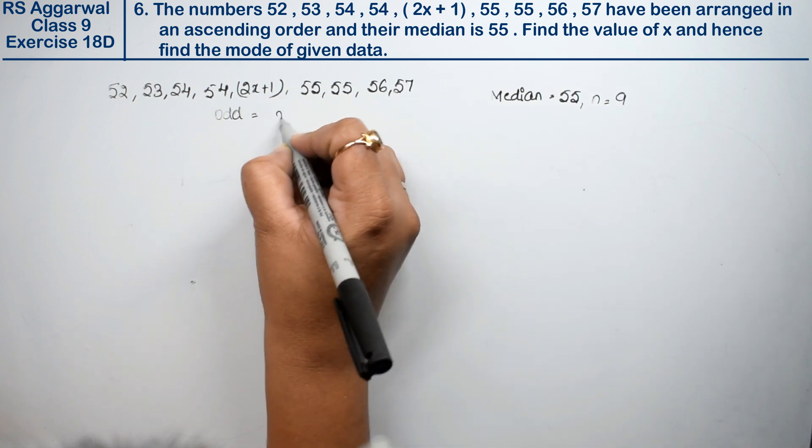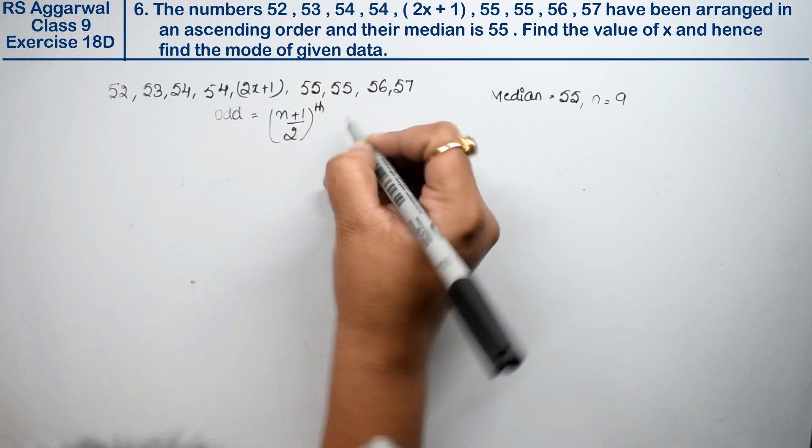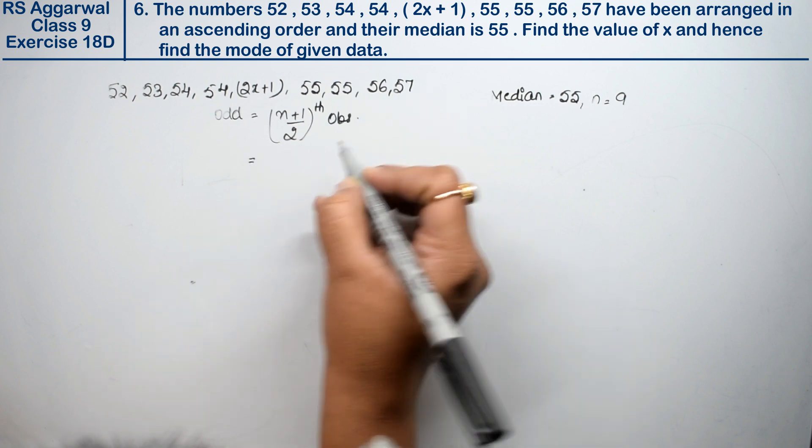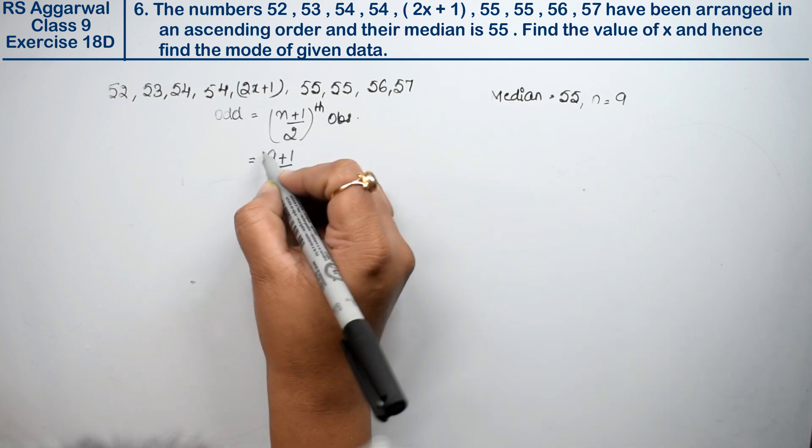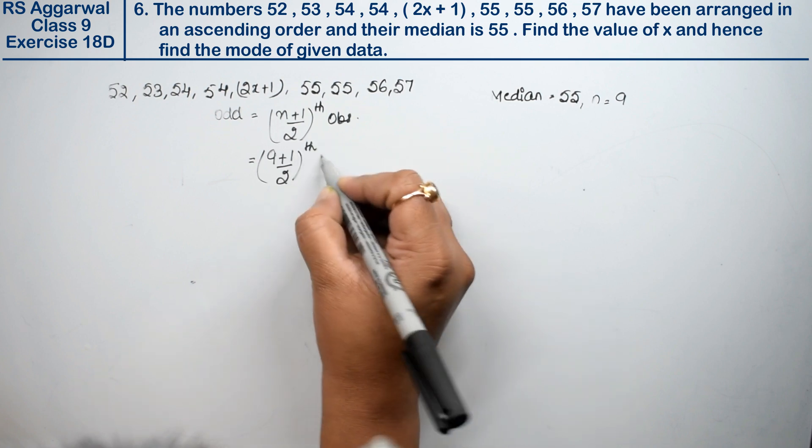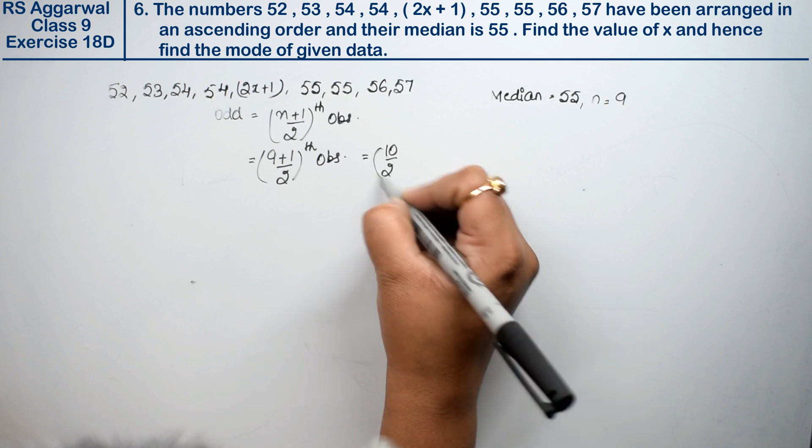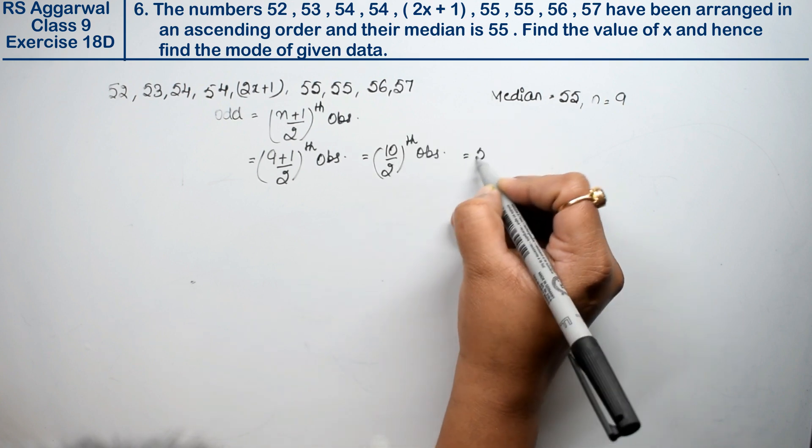When n is odd, the median is n plus 1 upon 2th observation. So that's 10 upon 2th observation, or we can say the 5th observation.